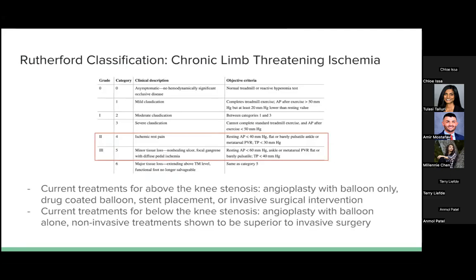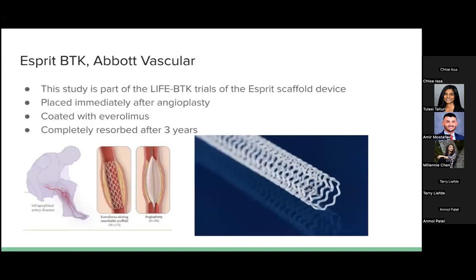The study population consisted of Rutherford class 4 and 5 patients with ischemic rest pain but not severe major tissue loss. The current treatments for below-the-knee stenosis are balloon-only angioplasty, superior to invasive surgery. This was an industry-sponsored study using Abbott Vascular, part of the LIFE-BTK trials with the Esprit BTK scaffold device — placed immediately after angioplasty, coated with everolimus (an mTOR inhibitor), and completely resorbed after three years, allowing for repeat intervention if needed.